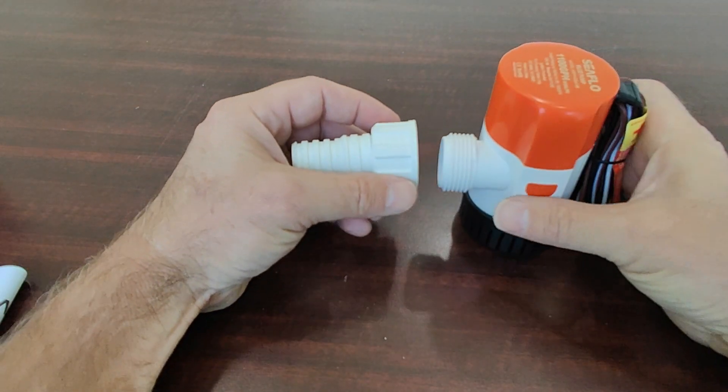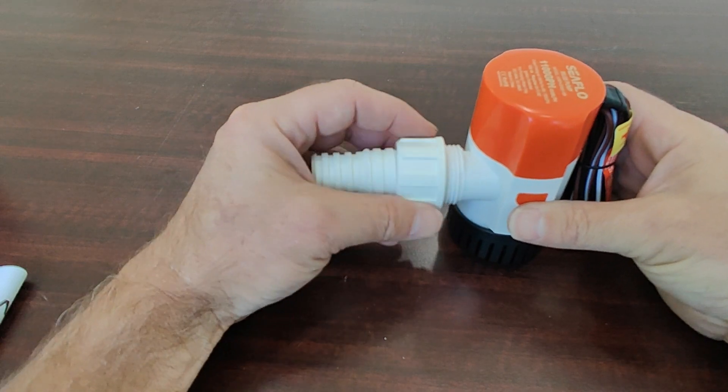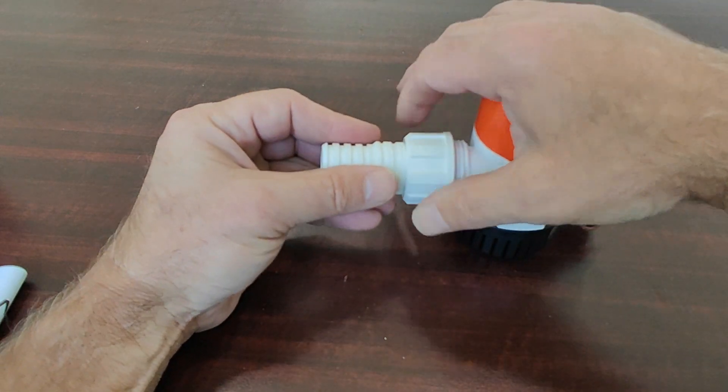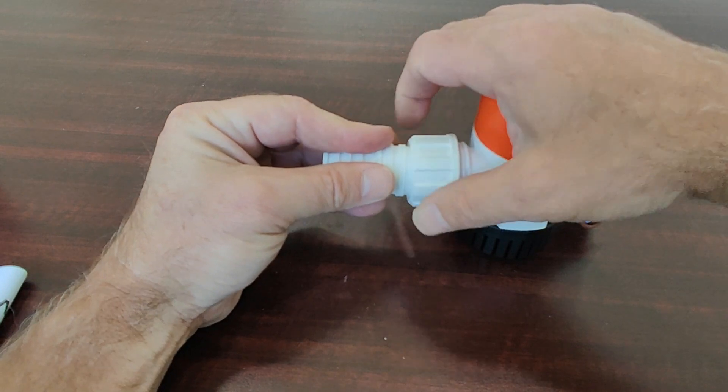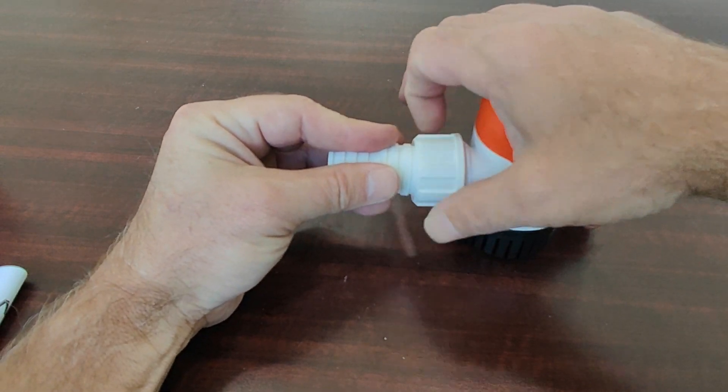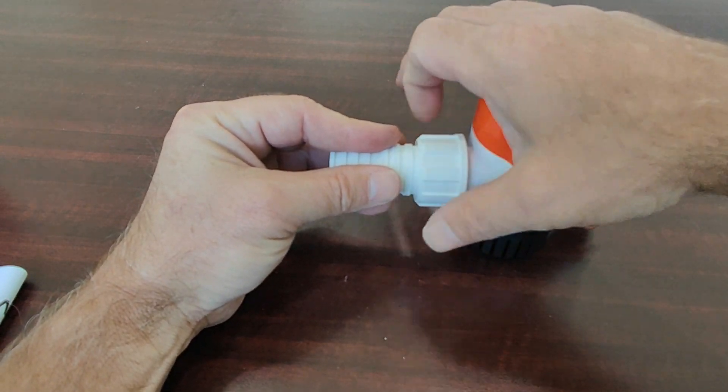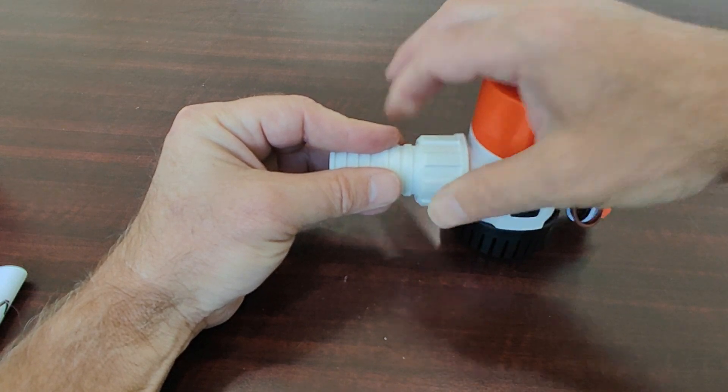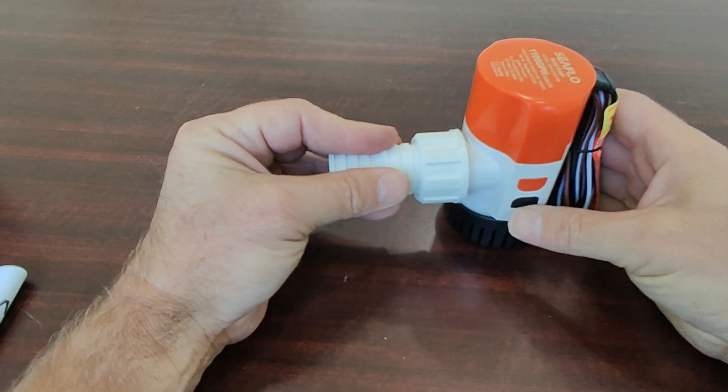The great thing about this quick connect fitting is that it allows you to install and remove the pump without ever removing the hose clamp off of your hose. So you can remove the pump to check for debris without taking off the hose from the outlet fitting.